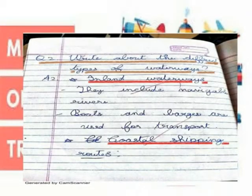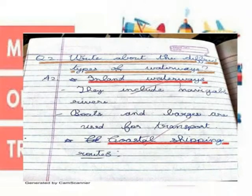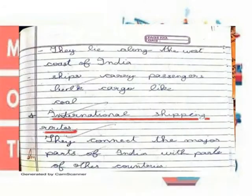Right above the different types of waterways. Inland waterways: they include navigable rivers, boats and larger routes for transport. Coastal shipping routes: they lie along the west coast of India, and ships carry passengers and bulk cargo like coal. International shipping routes: they connect the major ports of India with ports of other countries.